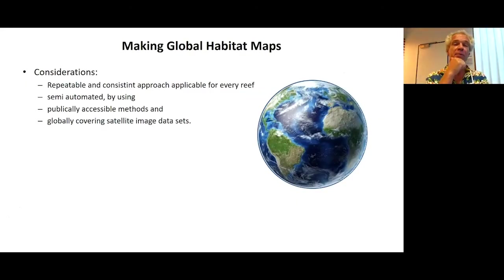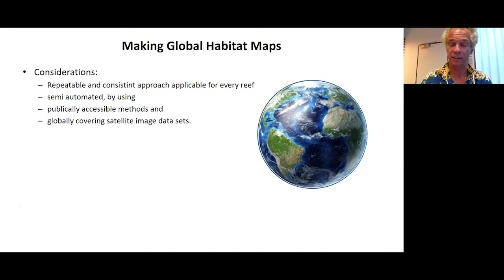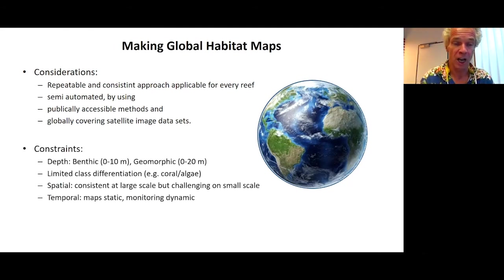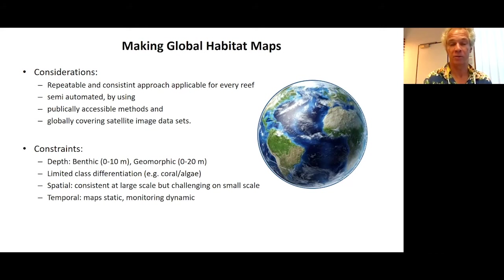When looking at mapping large regional reefs, we want maps that are repeatable and consistent — ideally automated, but at least semi-automated — with methods that are publicly accessible so there is no hiding of our methods. We need globally covering satellite image datasets. We had some constraints: mapping deeper than 10 meters for coral and algae at a global scale is overselling ourselves; geomorphically we can go a bit deeper, but differentiating benthic classes is hard. Differentiating between coral and algae is one of the hardest things from a remote sensing perspective. Airborne sensors can do it, but doing it globally with satellites is not yet possible.